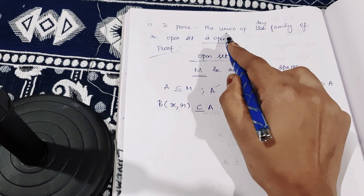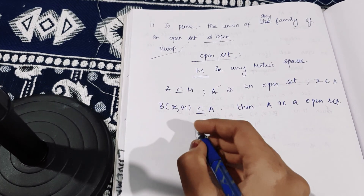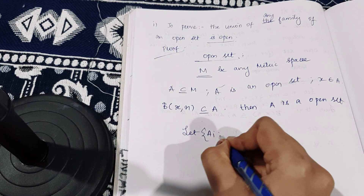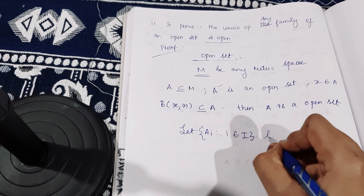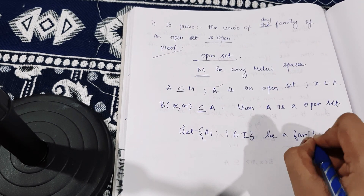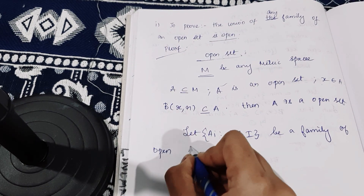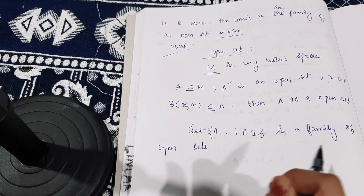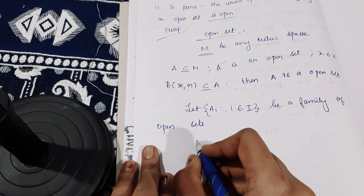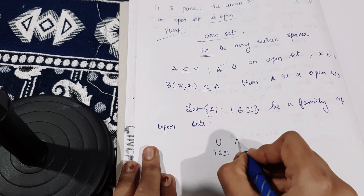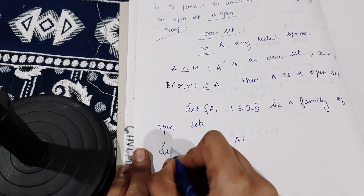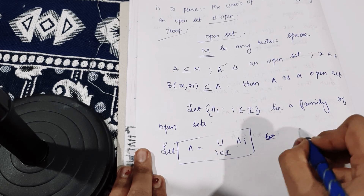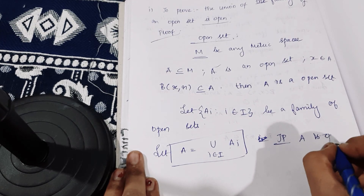We have to show that the union of any family of open sets is open. Let {A_I} such that I belongs to I be a family of open sets. We consider the union of this family — the union of A_I for I in I — and let me call this A. We have to prove that this A is an open set.